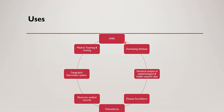Now, what are the uses of computers in Epidemiology? Computers are used in Health Management Information System (HMIS), developing databases, statistical analysis of epidemiological and health research data, disease surveillance, telemedicine, electronic medical records, geographical information system, and medical teaching and training. We will look at each of these one by one in the next slides.